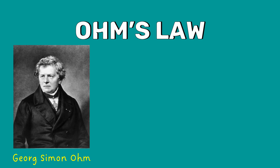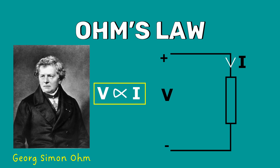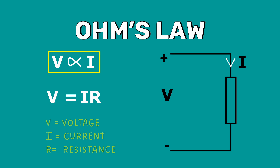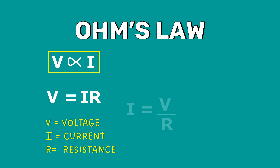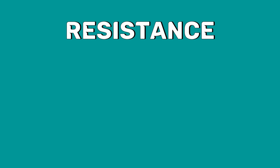George Simon Ohm was a German physicist and mathematician. He found that there is a direct proportionality between the voltage applied across a component and the resultant current flow. When he first published his work, no one accepted it. Later, in the 1850s, his work was recognized and proven. Mathematically, Ohm's law is written as V is equal to IR, where R is the resistance. The same formula can be rewritten to calculate the current and resistance respectively. The resistance is measured in Ohms, symbolized by the Greek letter Omega.